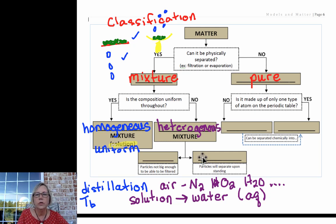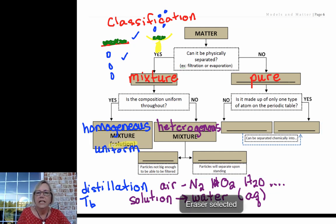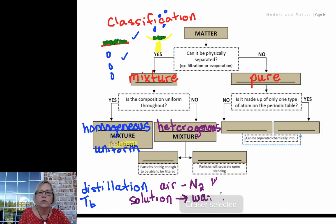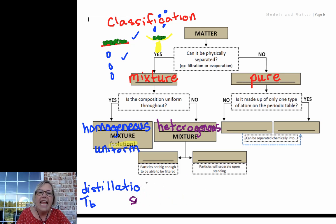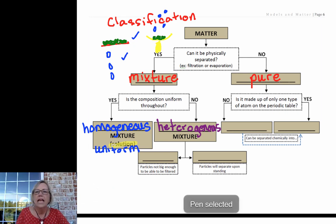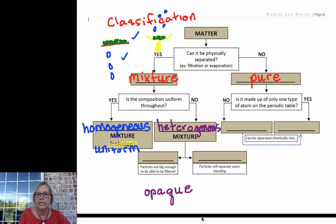Heterogeneous mixtures are separated even more, so we can separate those further by looking at the size and the behavior of the particles. One of the ways we can tell if it's a heterogeneous mixture is it will be opaque. We will not be able to see through that.